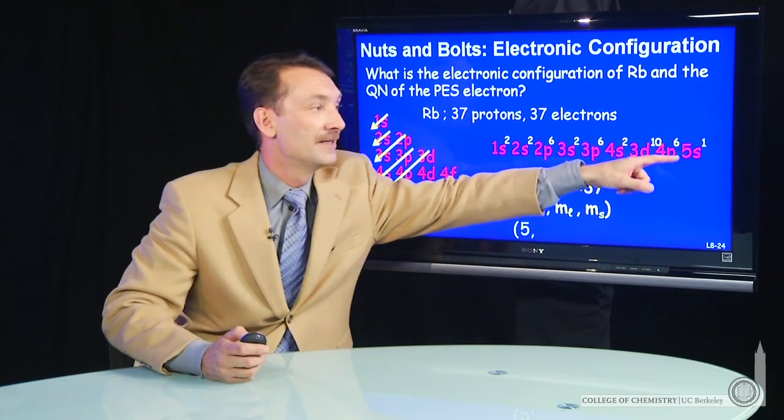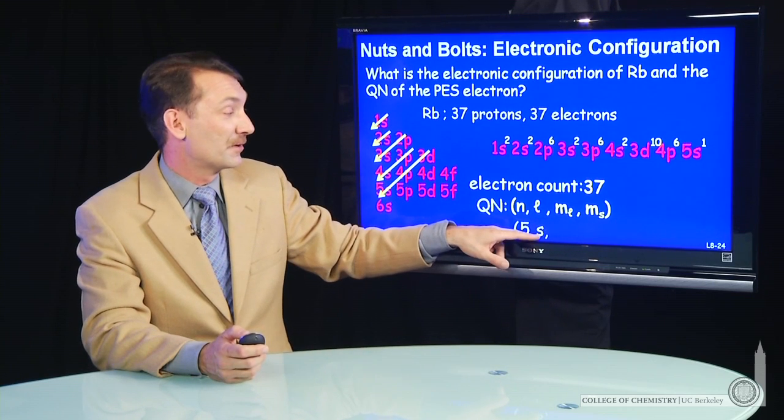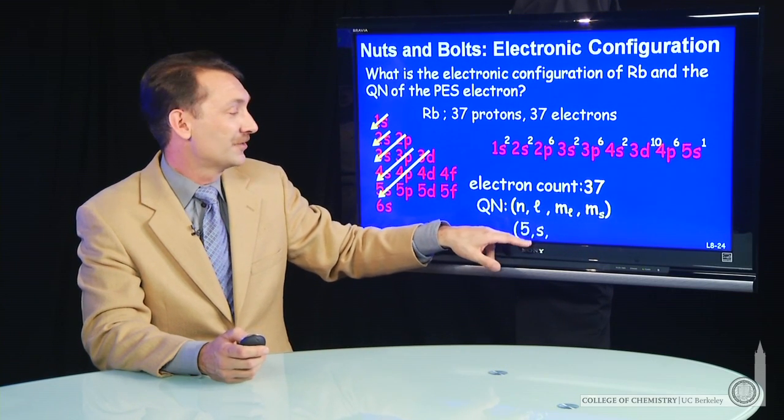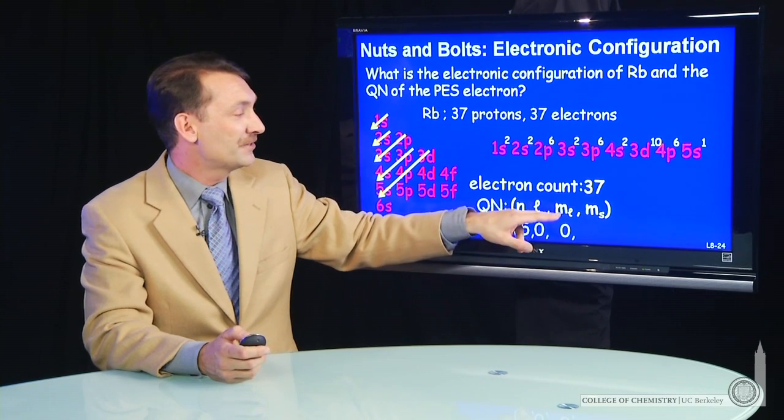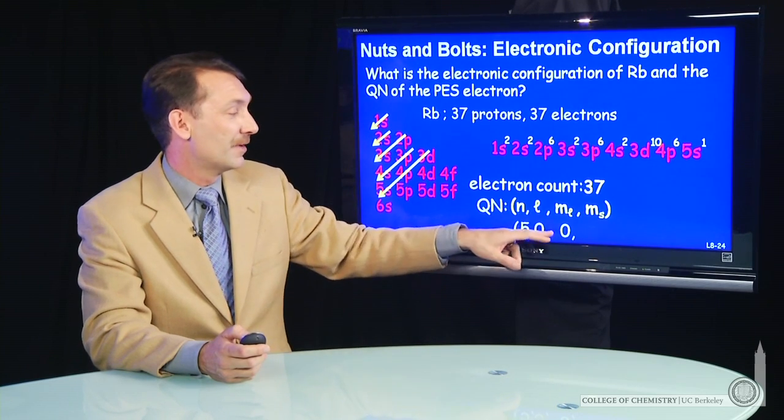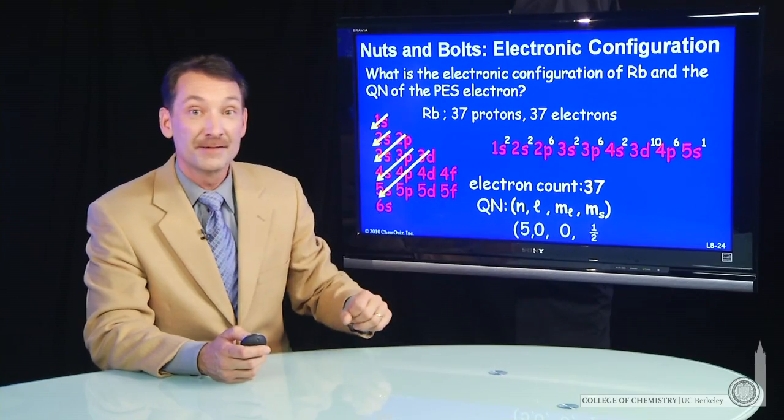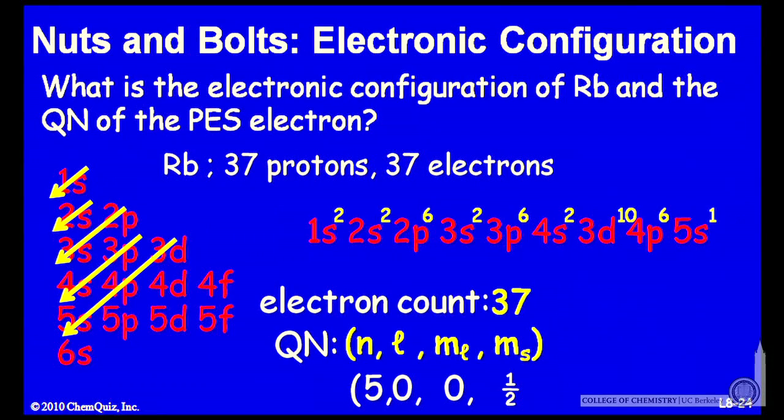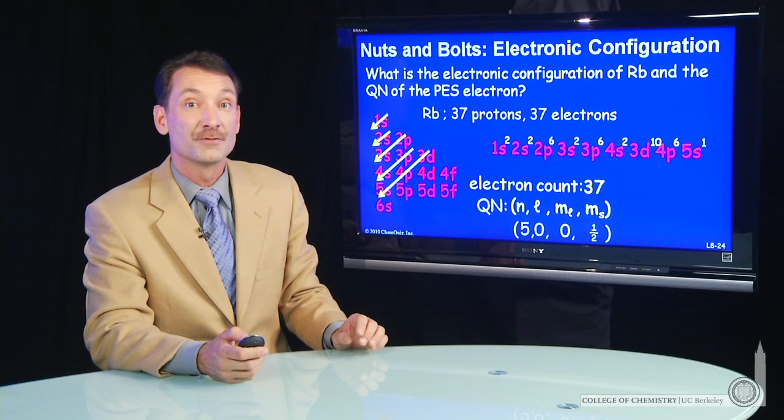l is 0 because it's an s orbital. Remember, the designation for l equals 0 is s. So we'll change that s to a 0 for l. m sub l will be 0 because that's the only possible value of m sub l for l equals 0. And m sub s can either be plus 1 half or minus 1 half, depending on how that electron was filled. Rubidium will be paramagnetic. It has one unpaired electron. It can either be in the plus 1 half or the minus 1 half state.